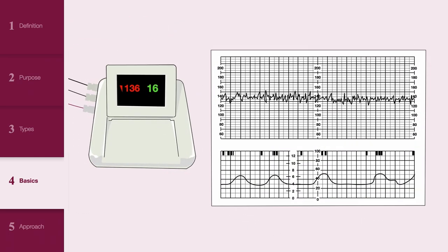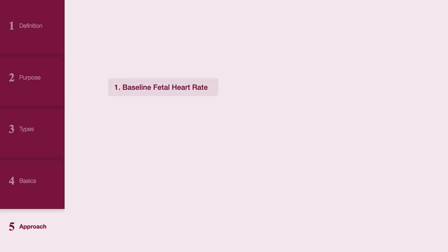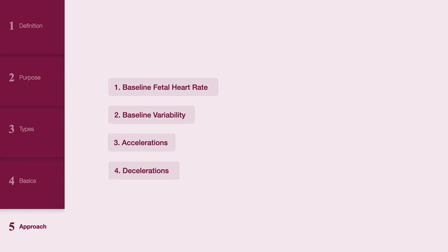When reviewing a CTG, the fetal heart rate is represented at the top, contractions are shown at the bottom, and fetal movements are indicated by markers. The five features assessed on CTG include baseline fetal heart rate, baseline variability, presence of accelerations, decelerations (with three types to look for: early, variable, or late decelerations), and uterine activity — in other words, contractions. Here you should note their frequency, duration, and whether any coupling is present.